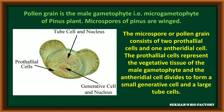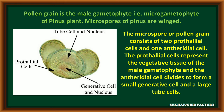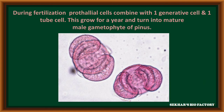The microspore or pollen grain initially consists of two prothallial cells and one anthridial cell. The prothallial cell represents the vegetative tissue of the male gametophyte, and the anthridial cell divides to form two generative cells and a large tube cell. During fertilization, the prothallial cell combines with one generative cell and one tube cell. This growth takes years and turns into the matured male gametophyte of Pinus.